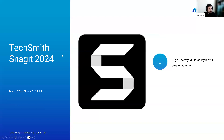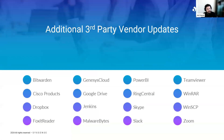Some additional products have also seen updates since the start of the month. These include Amazon Workspaces, Bitwarden, various Cisco products including WebEx, Citrix Workspace, Dropbox, Foxit Reader, Genesis Cloud, Google Drive, Jenkins, Malwarebytes, Power BI, RingCentral, Skype, Slack, TeamViewer, WinRAR, WinSCP, and Zoom.